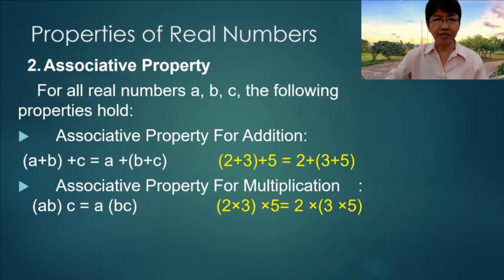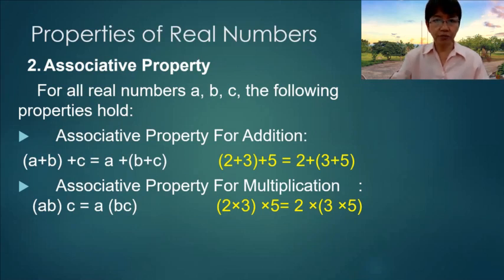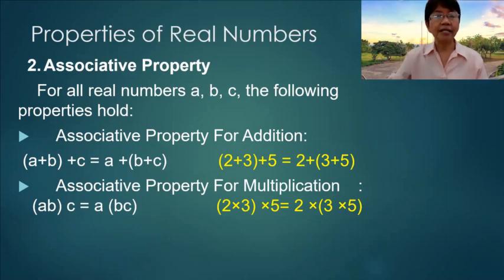Associative Property: for all real numbers a, b, and c, the following properties hold — Associative Property for Addition and Associative Property for Multiplication. In the associative property of adding two or three numbers, we first group together two numbers at a time and then add the next number.